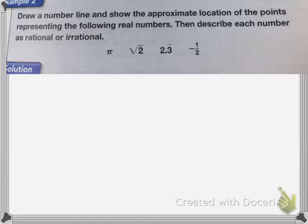So irrational numbers are numbers that you cannot express as a ratio of two integers on the number line. So if we drew a number line to show the approximate location of these points...